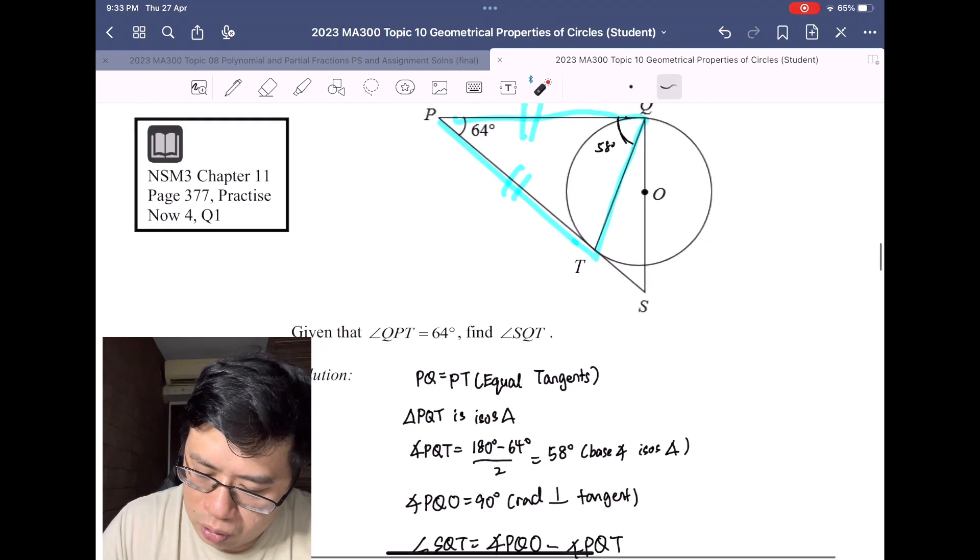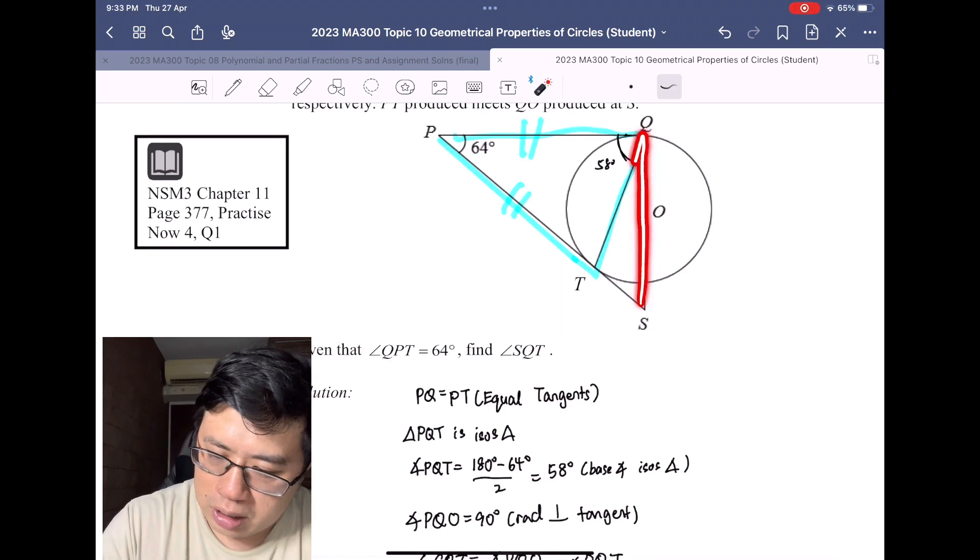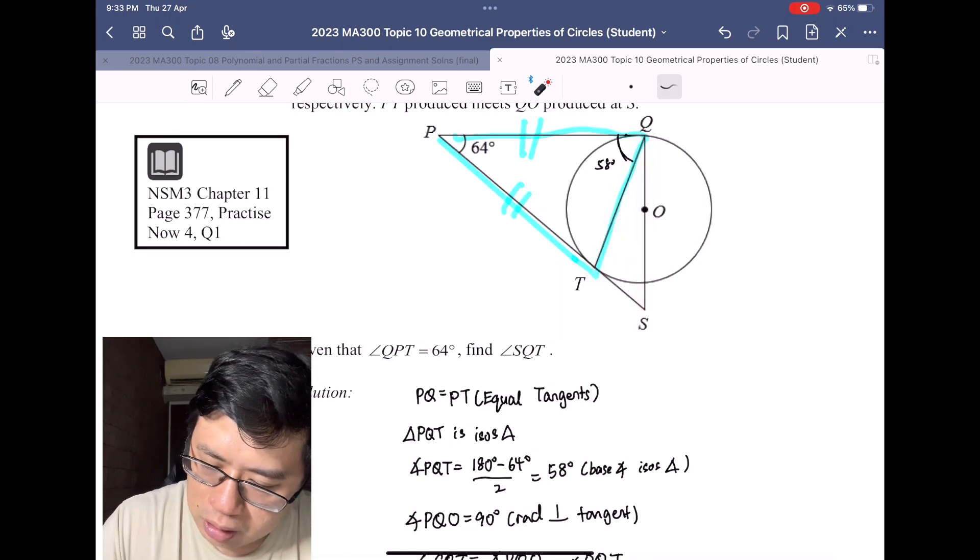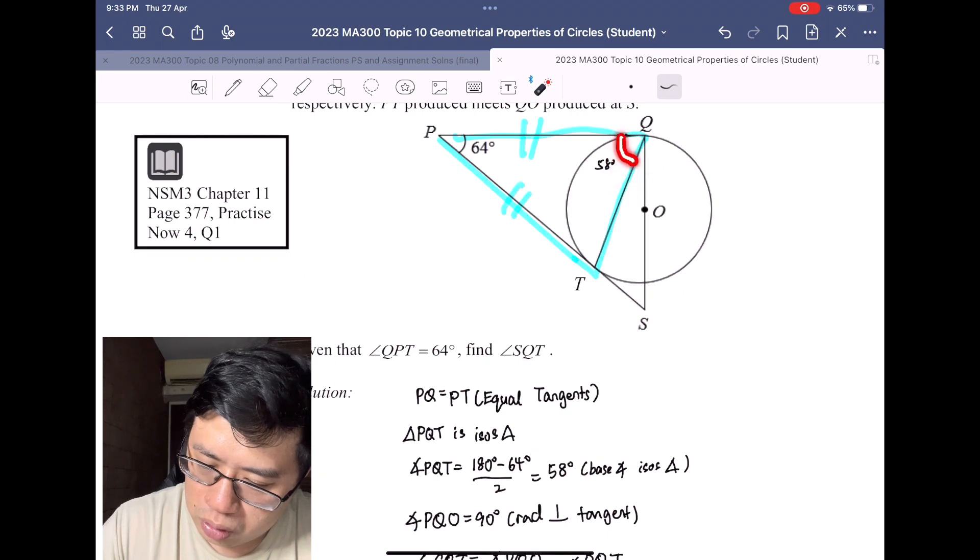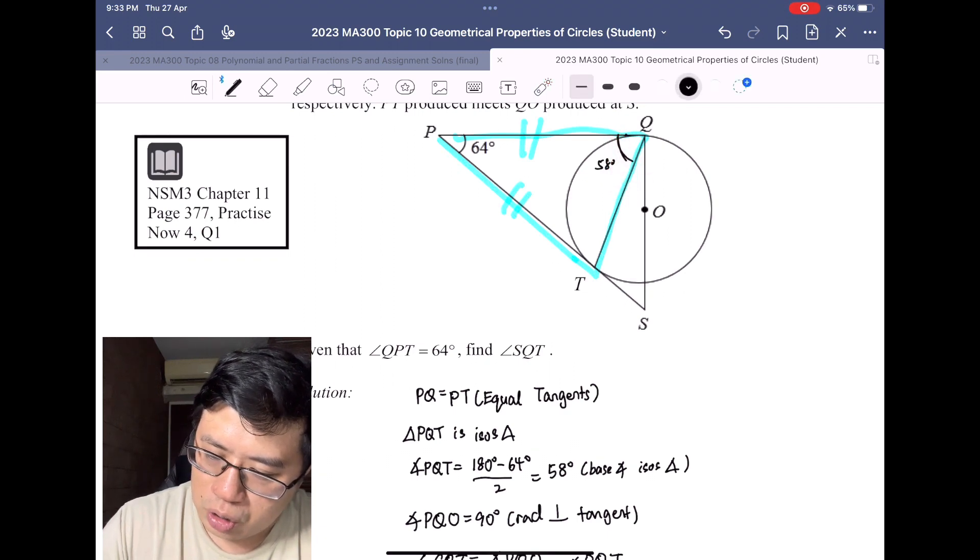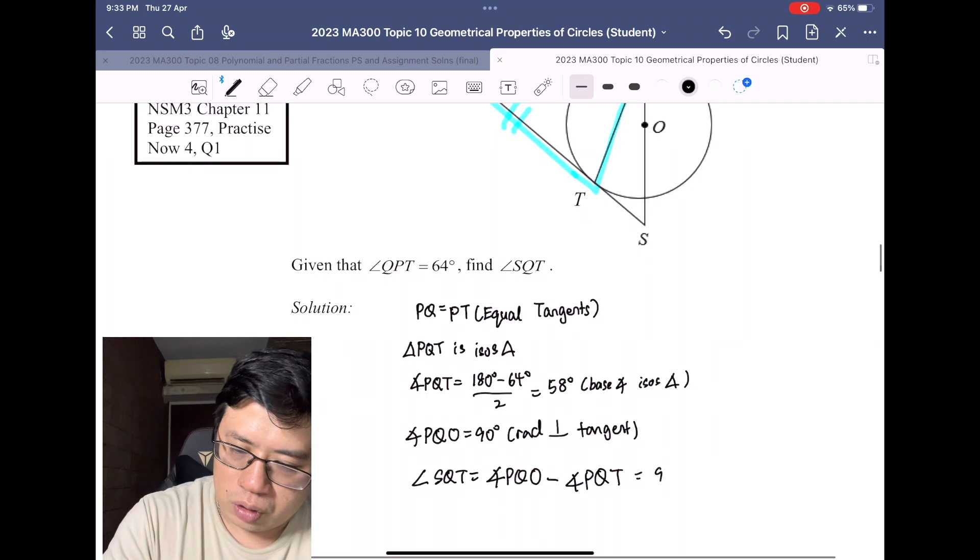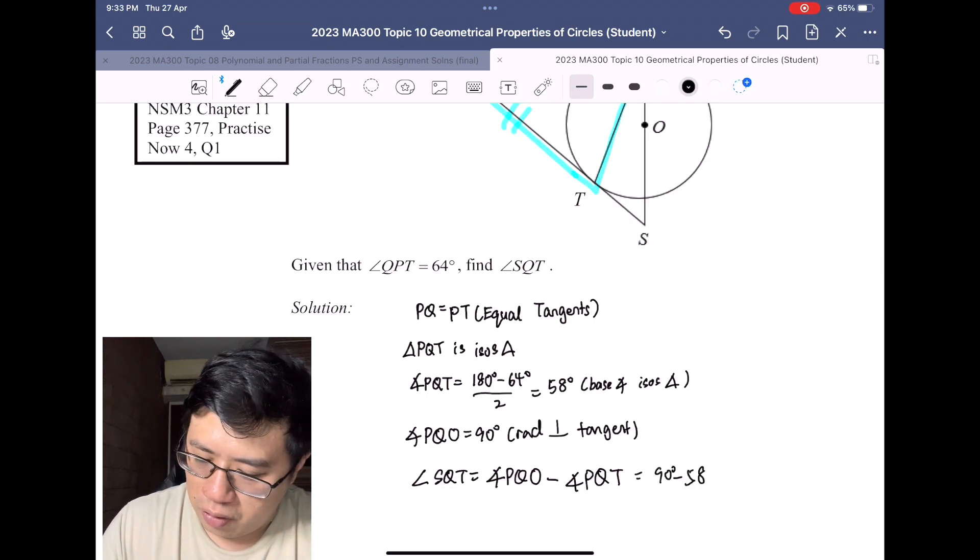Angle SQT will just be PQO subtract PQT, which gives us the total of 90 degrees minus 58.